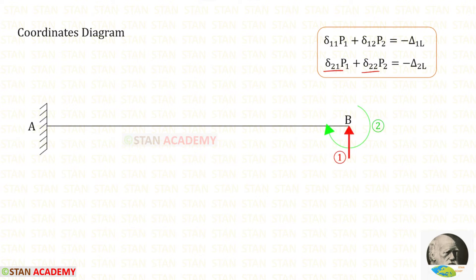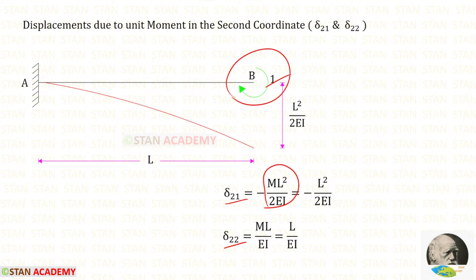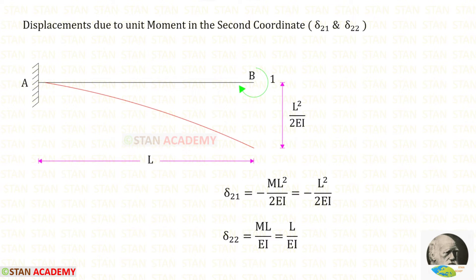Now let us find Delta 21 and Delta 22. For this we apply a unit moment in the direction of the second coordinate MB — that is, in the clockwise direction at point B. In a cantilever beam with a couple moment at the free end, the deflection is ML²/(2EI), so with M=1 we get L²/(2EI), and the slope is ML/(EI), giving L/(EI). The deflection Delta 21 is negative (downwards) and the slope Delta 22 is positive.